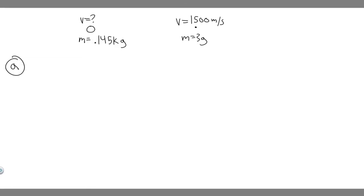In this problem, we're told the pitcher claims he can throw a 0.145-kilogram baseball with as much momentum as a 3-gram bullet moving with a speed of 1.5 × 10³ meters per second. Part A: what must the baseball speed be if the pitcher's claim is valid? And Part B: which has greater kinetic energy, the ball or the bullet?